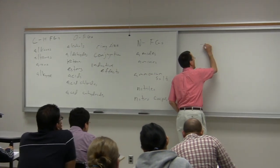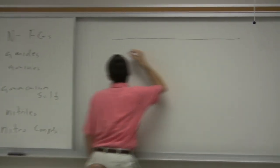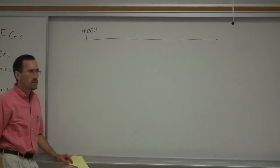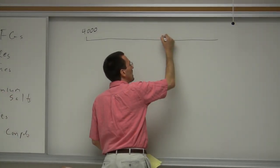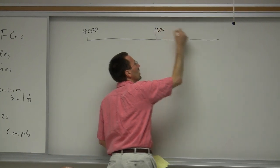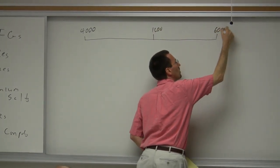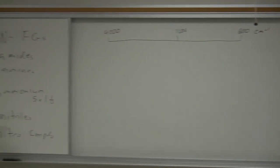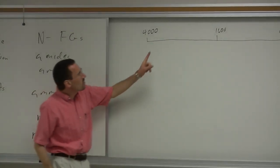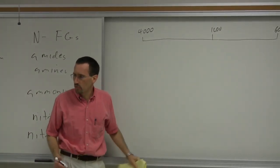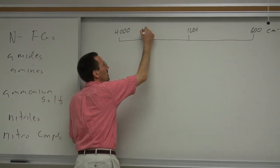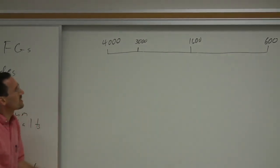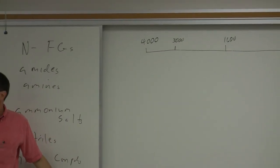When I look at an IR spectrum, generally in my mind's eye I think from about 4,000 to about 600 cm⁻¹. I end up drawing a line at 3,000 wavenumbers in my mind, and I think this really ends up dividing the spectrum into some important regions.